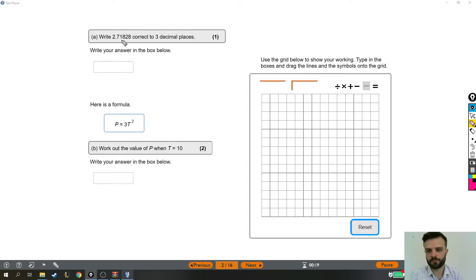We're being asked to write 2.71828 to three decimal places. So let me just write that out a bit bigger. We've got 2.71828 and we are being asked to round it to three decimal places.